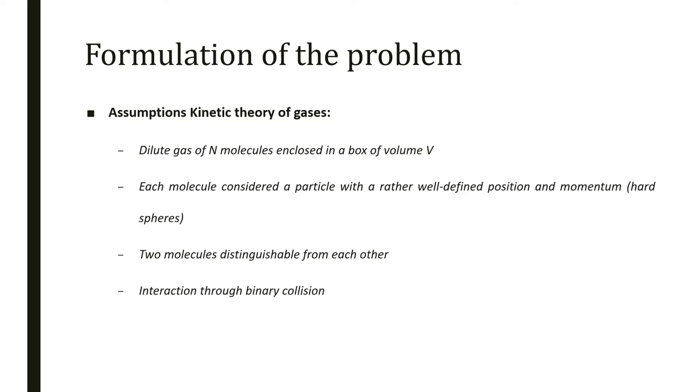Reviewing some assumptions of kinetic theory of gases: Boltzmann works with a gas of N molecules enclosed in a box of volume V with sufficiently low density to avoid higher complex interactions. Each molecule is treated as hard spheres with well-defined position and momentum. Molecules are distinguishable from each other and interaction occurs through binary collisions.